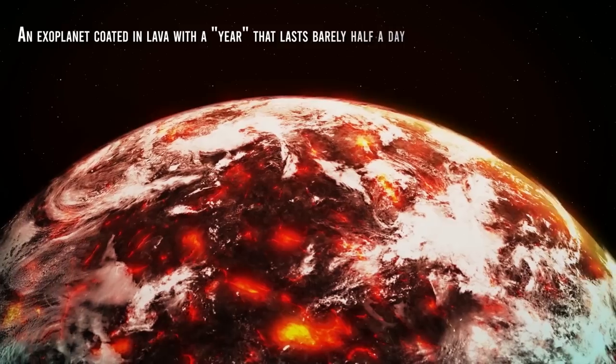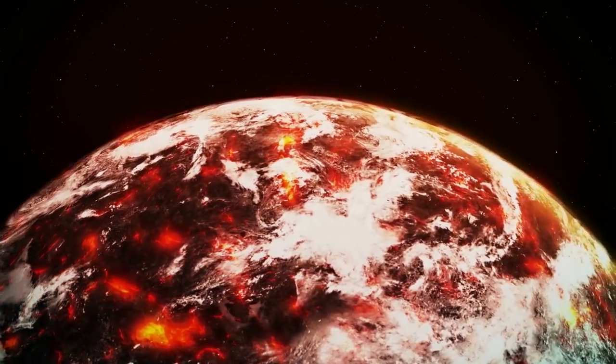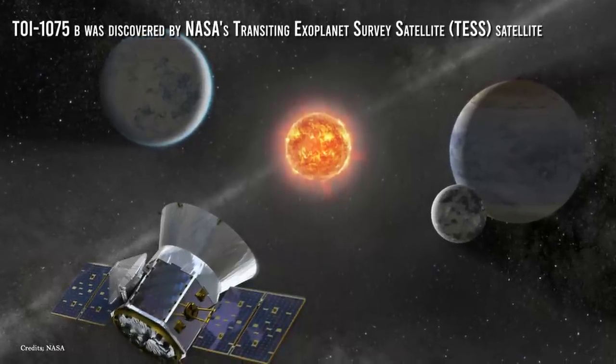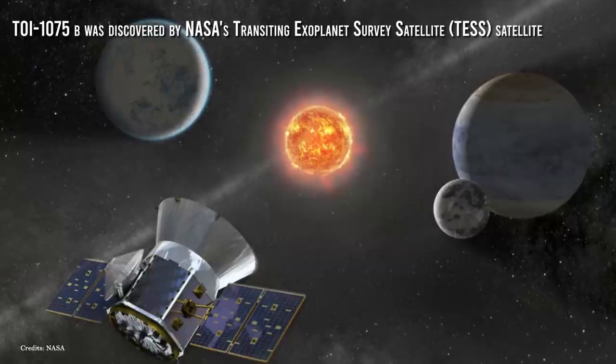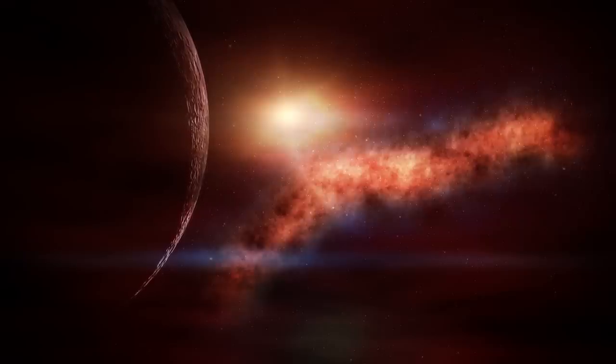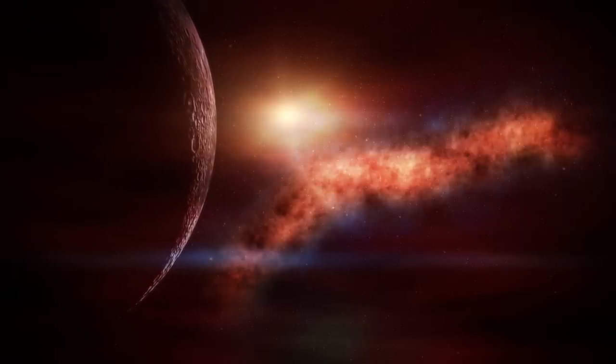TOI-1075b was discovered by NASA's Transiting Exoplanet Survey Satellite, TESS. Because of its closeness to its parent system, a tiny red-orange star around 200 light-years distant from Earth, it has a super-heated feature with a temperature of roughly 1,922 degrees Fahrenheit.